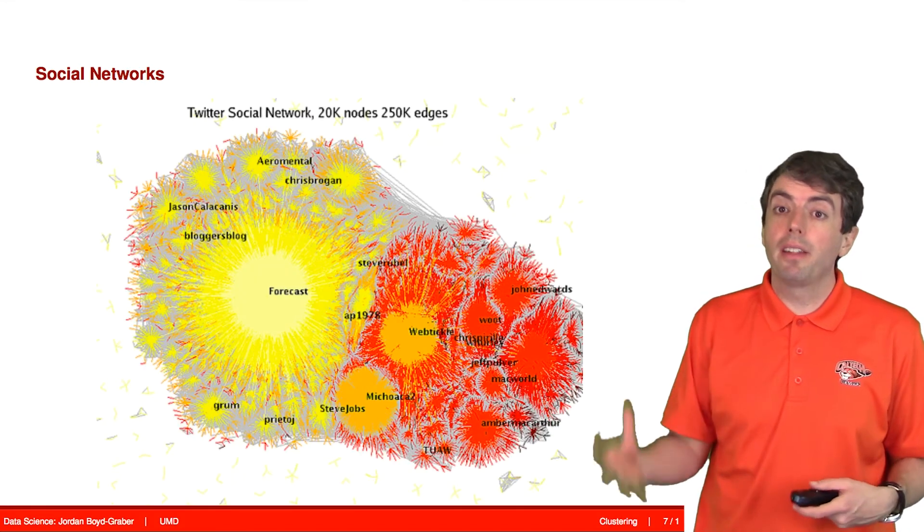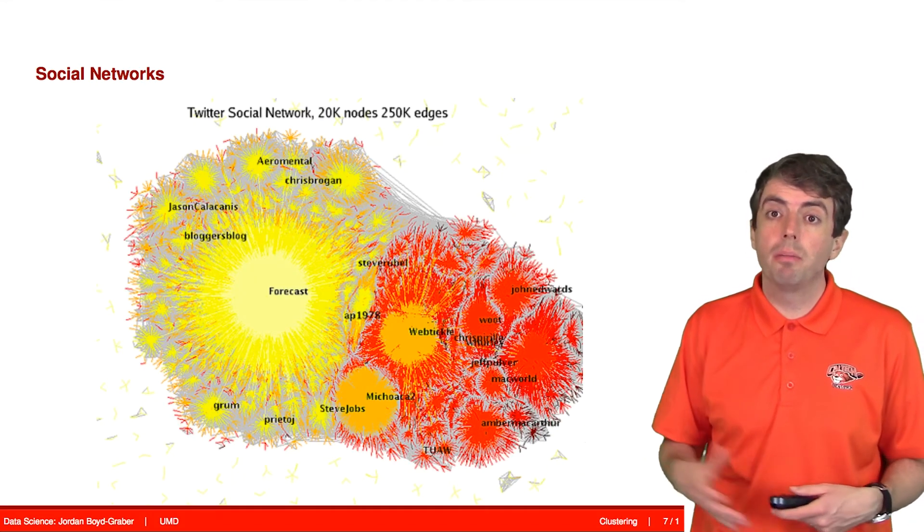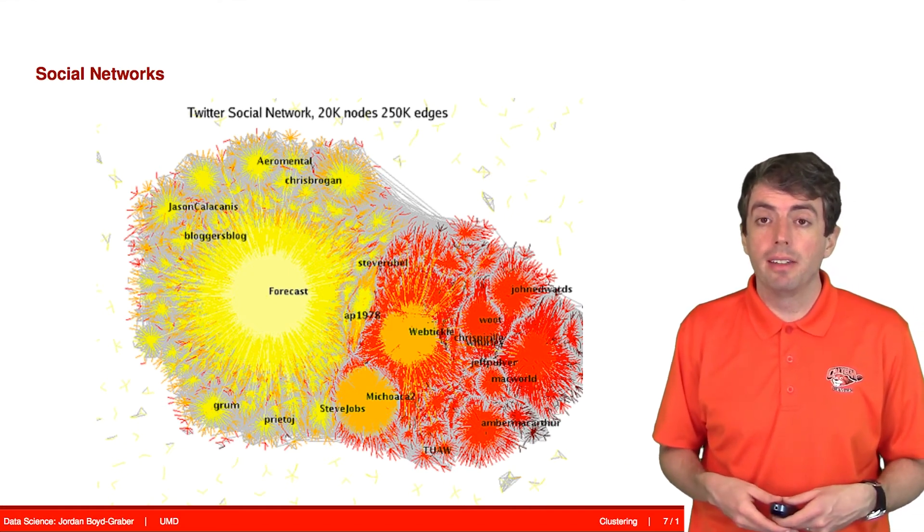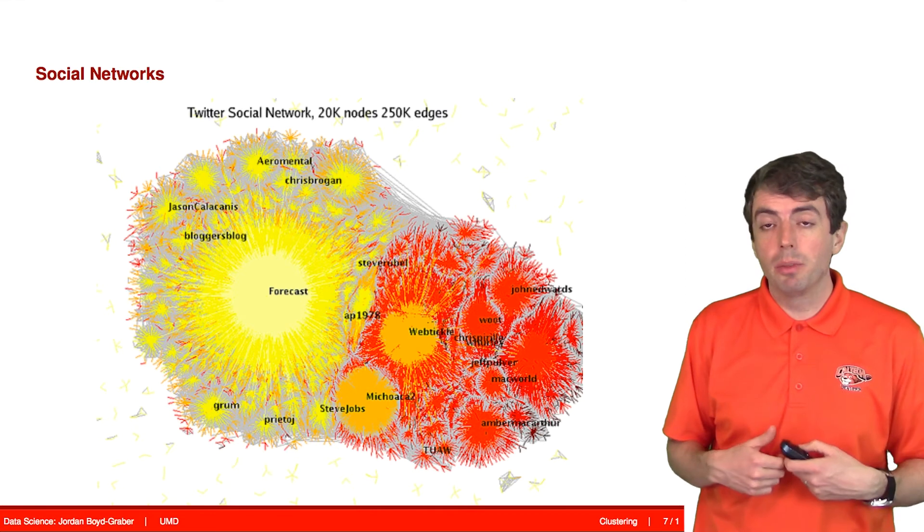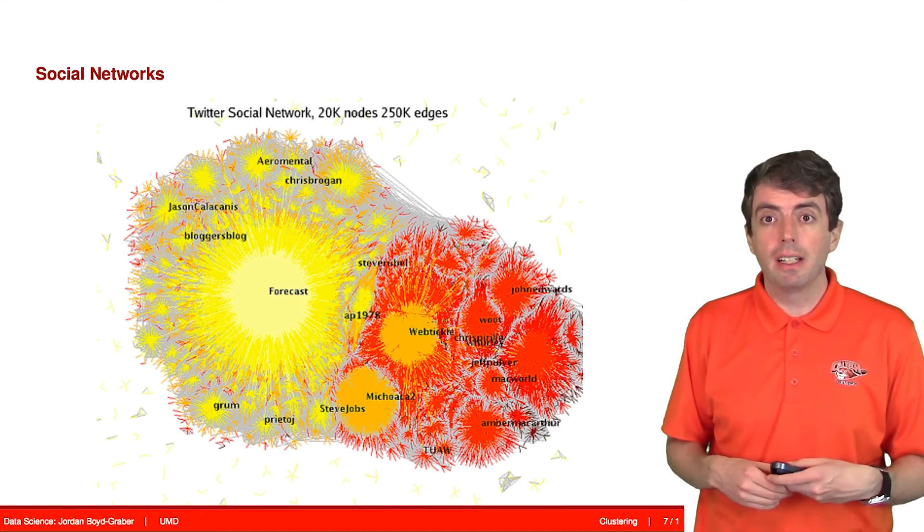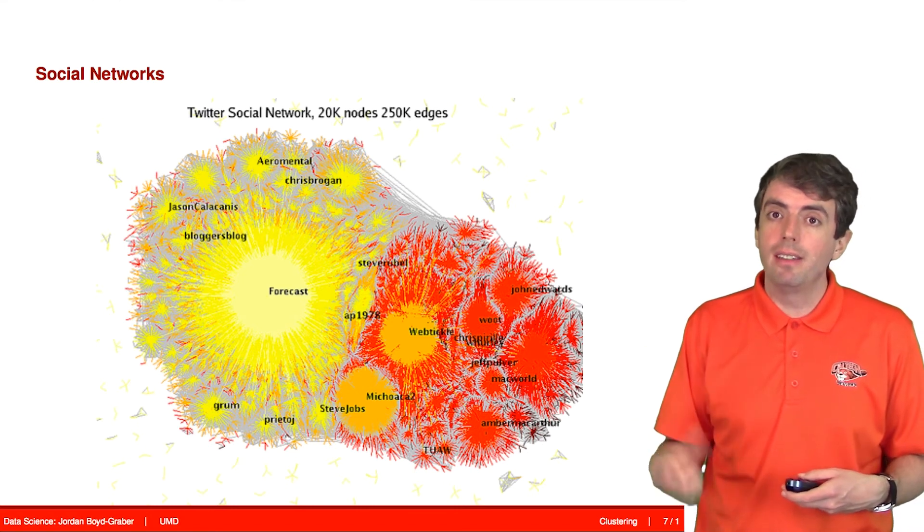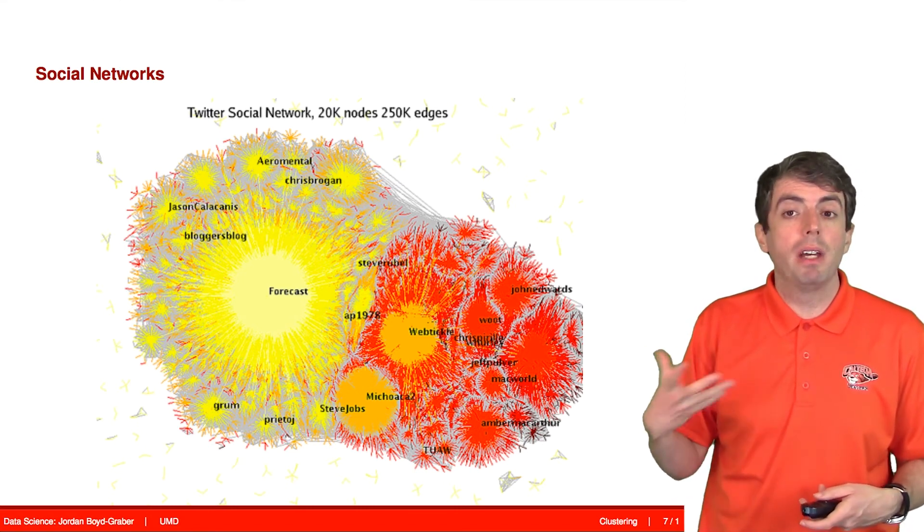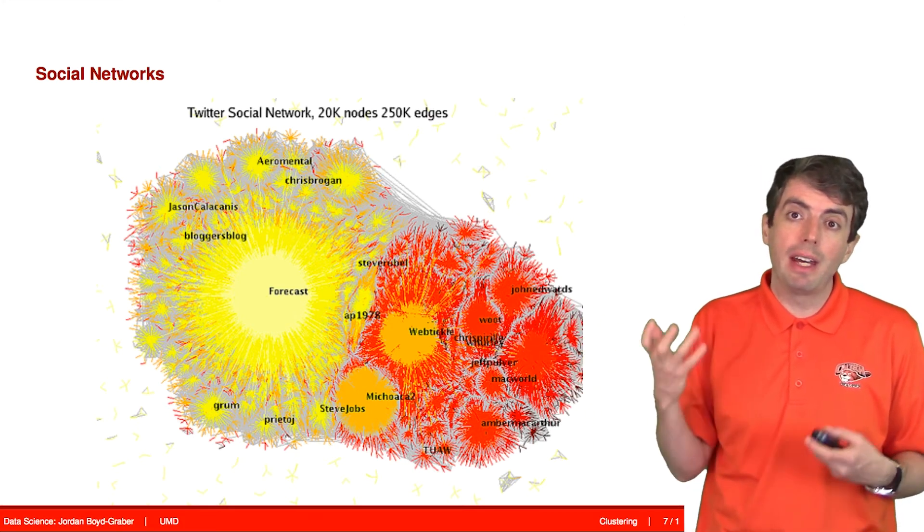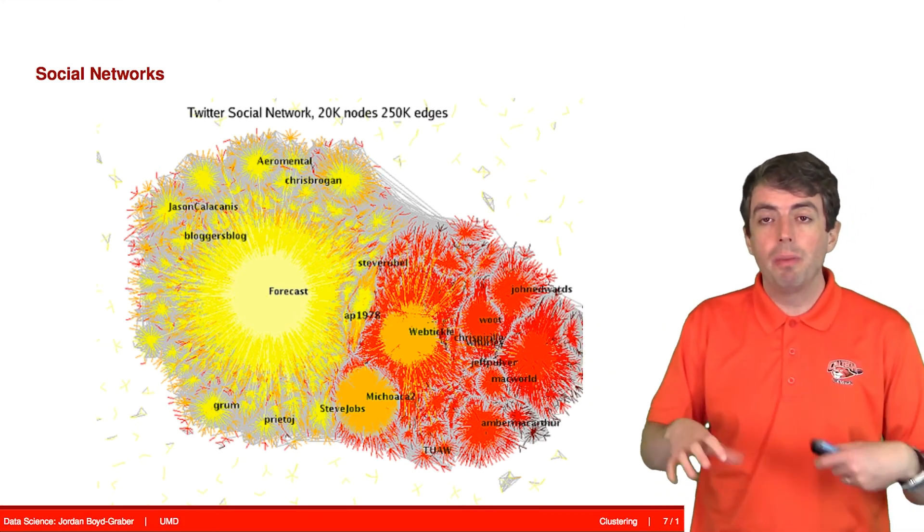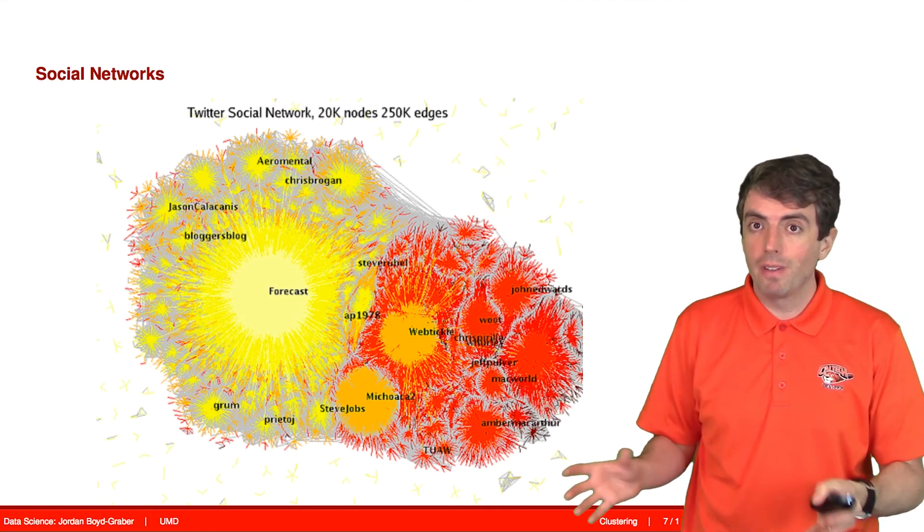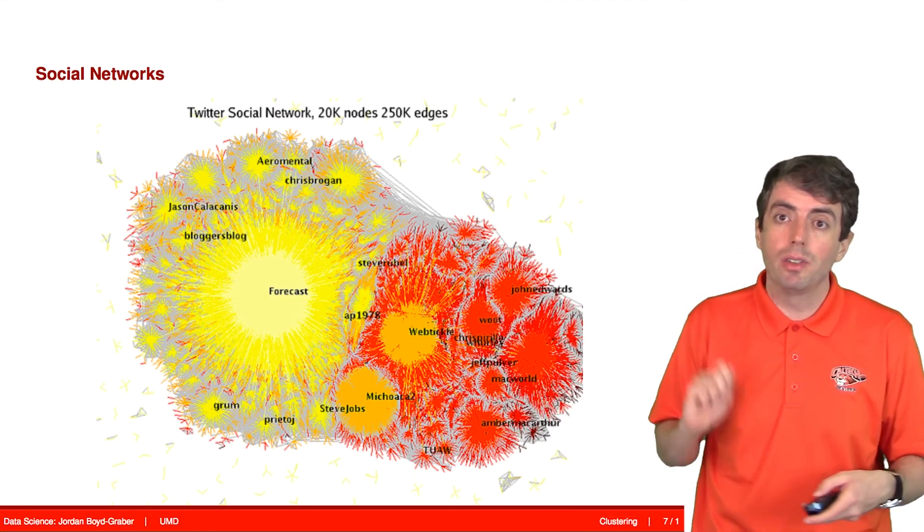Looking at social media is another place where clustering is very important. One of the things that people often do when they're trying to understand what's going on in social media is they cluster similar things together. If you do that on Twitter or Facebook, you discover communities. Those communities often behave in similar ways, and you can discover what a particular community is talking about at a given time. Clustering helps you make sense of a very large data set, condense it down into a small number of clusters that make sense, and then you can analyze those clusters individually.